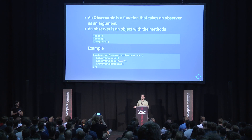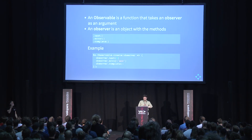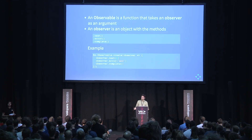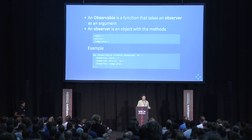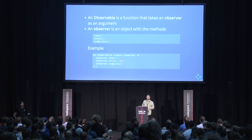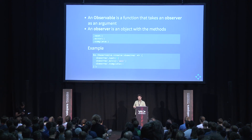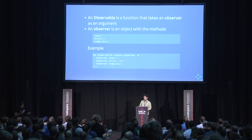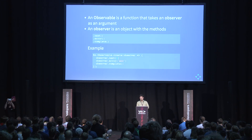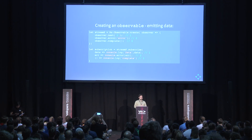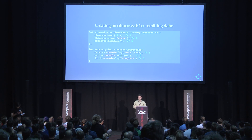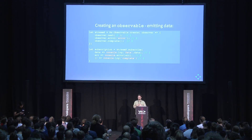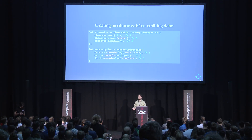An observable is simply a function that takes an observer as an argument. An observer is an object with methods: next, error, and complete. In the example at the bottom we create an observable manually by calling the observer with those methods — next, error, and complete. This is a very simple observable, but it's the core foundation of your learning. If we call next, the first callback in subscribe is hit; if we call error, the second; and complete signals the end of the stream.